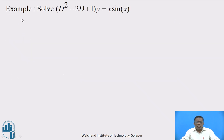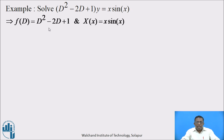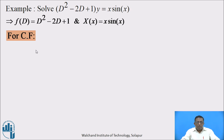Now consider another example. Solve (D²-2D+1)·y = x·sin(x). Solution: here f(D) = D²-2D+1 and X(x) = x·sin(x).